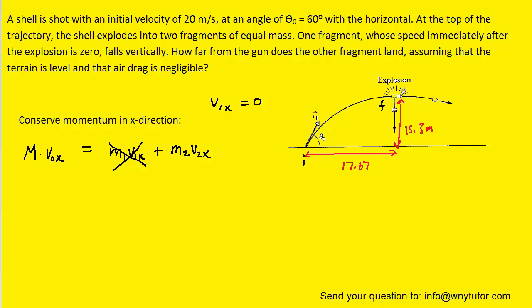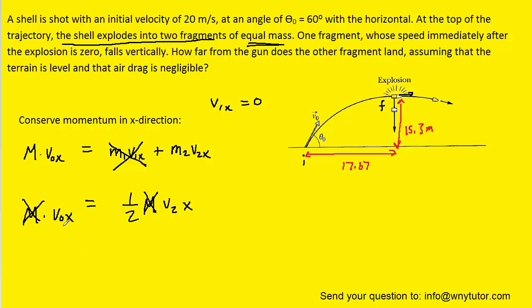The other piece carries on in the horizontal direction. The shell explodes into two fragments of equal mass, so if the original mass was M, each piece is one half M. Mass cancels from both sides of the equation. On the left side we have the initial velocity in x, which is 20 times cosine of 60 degrees, set equal to one half times the final velocity of the second fragment. Multiplying both sides by two gives a final velocity of 20 meters per second — this is the velocity of the second piece after the explosion, traveling in the x direction.